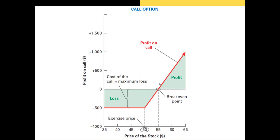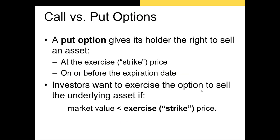To illustrate how call options pay off, let's look at this chart. We have the price of the underlying stock on the x-axis and the profit on the call option on the y-axis. When you buy a call option you pay a premium — in this case $500 total. If the stock price rises to $60, and your strike price is $50, your payoff is $10 per share. Your profit is that $10 per share minus whatever your premium was per share.